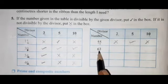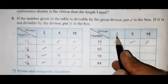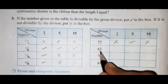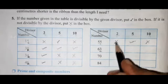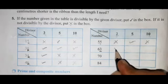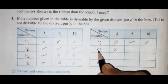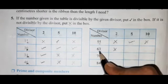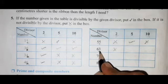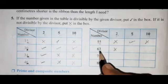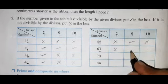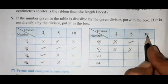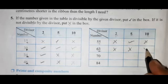Next number is 63 and divisor is 2. At the unit place, the digit is 3, so 63 is not divisible by 2 — put cross. Is 63 divisible by 5? No, because there is no 5 or 0 at the unit place — put cross. Is 63 divisible by 10? No — put cross.